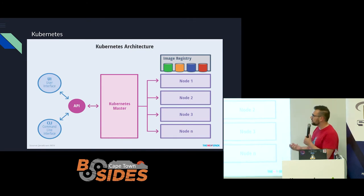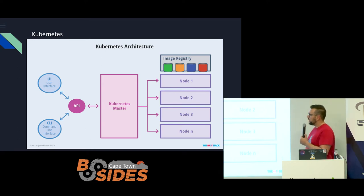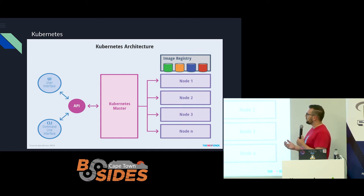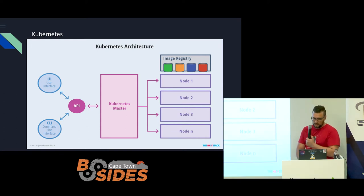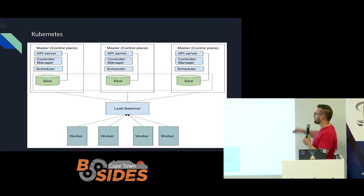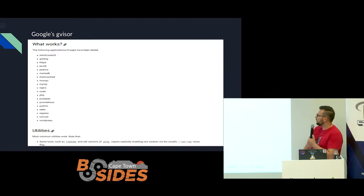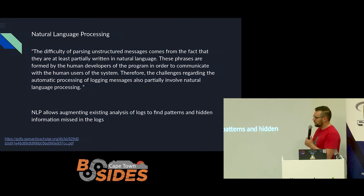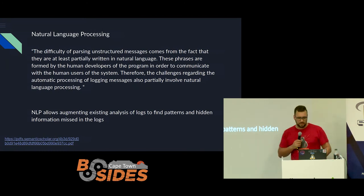GVisor also integrates with Kubernetes. Initially, the vulnerability of the Docker daemon itself would add further attack surface to Kubernetes — you could potentially hit multiple nodes since everything's an API. Because of the amount of services each running as a container, GVisor also allows you to scale across multiple containers and pods.